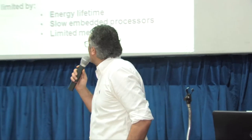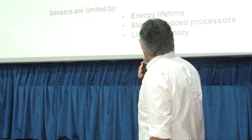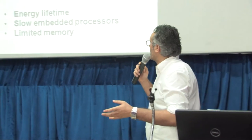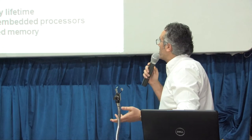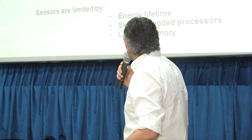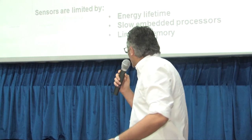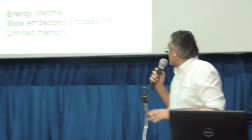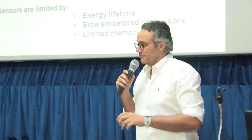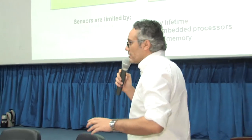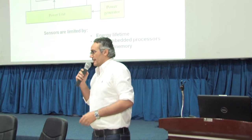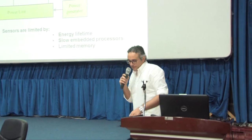For the sensor network architecture, briefly, we have the power unit like a battery, a small processor, small memory, a sensor, a converter, an analog-to-digital sensor, and a transmitter for communication. This gives us limited energy lifetime, a slow embedded processor, and limited memory. We have many problems in this device because of energy consumption and the processor capacity.